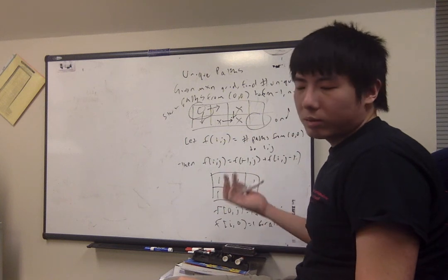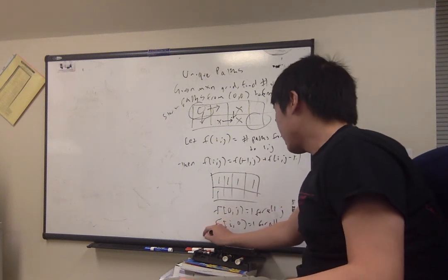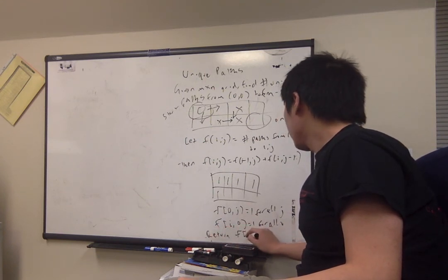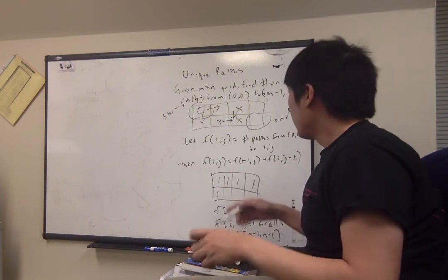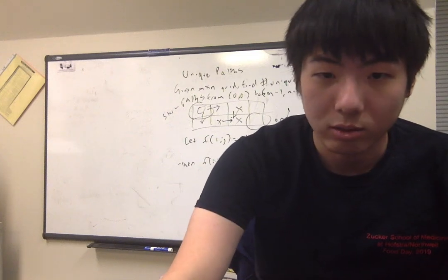And then we will loop through the table and solve this recurrence relation. And then at the very end, we will simply return f of m minus 1, n minus 1. And that will be the number of paths in an m by n grid. Pretty simple question.